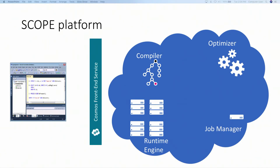I'll quickly walk you at a high level on how users interact with Scope and Cosmos. Most users submit a job using Scope Studio, which is our Visual Studio plugin. It goes through the front end and the job service, making it to the Scope compiler where it gets compiled on the cluster. The compiler produces an abstract syntax tree along with other artifacts. This then makes it to the optimizer, which produces an efficient DAG execution plan specifying the parallelism for different stages. The optimizer also produces something called the algebra, which is the main input to the job manager.